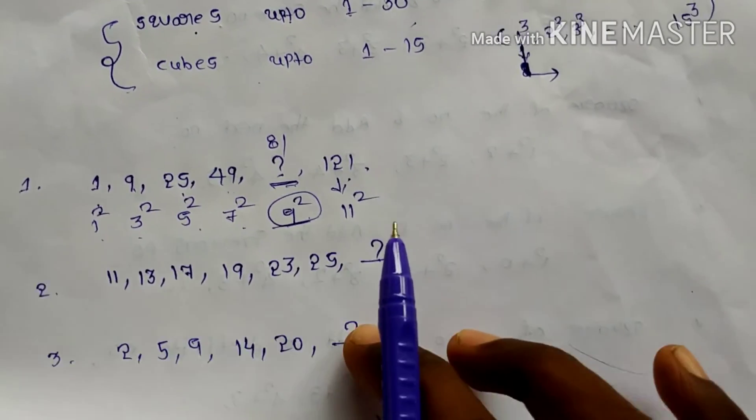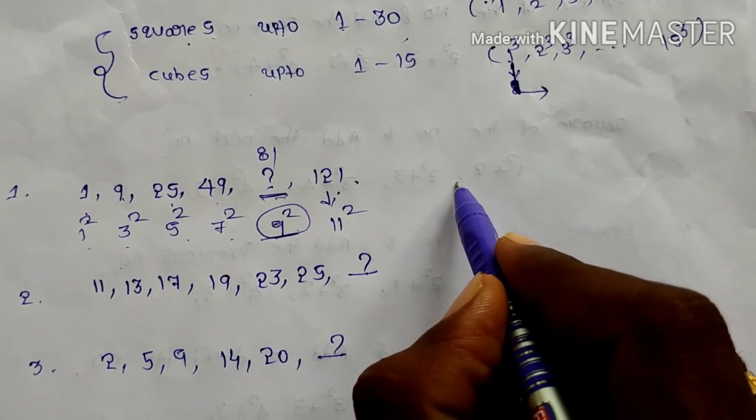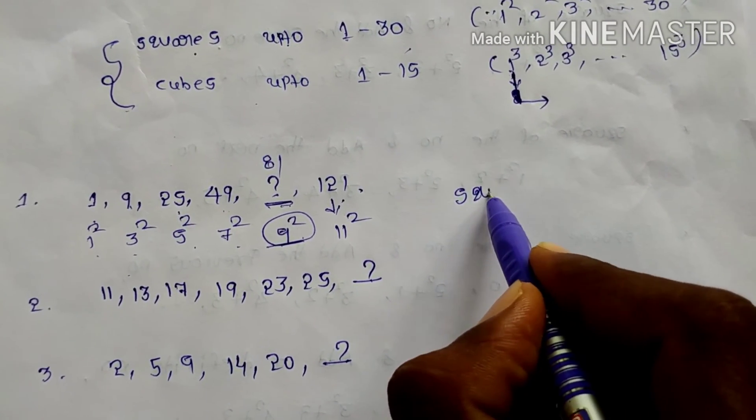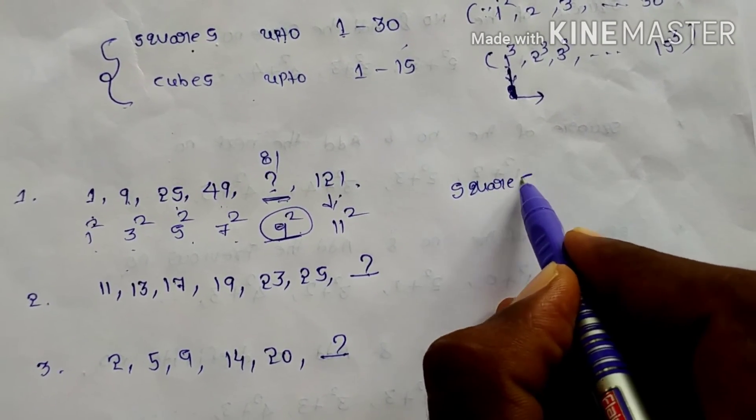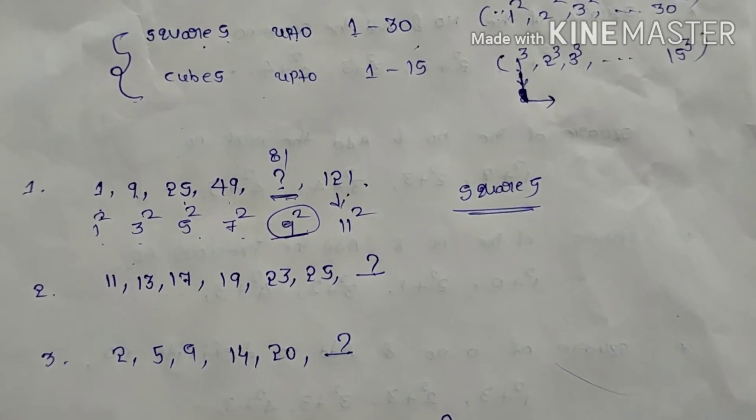This problem is based on squares only. Yes or no? These are all squares. 1, 3, 5, 7, 9, 11. First problem is depending on squares.